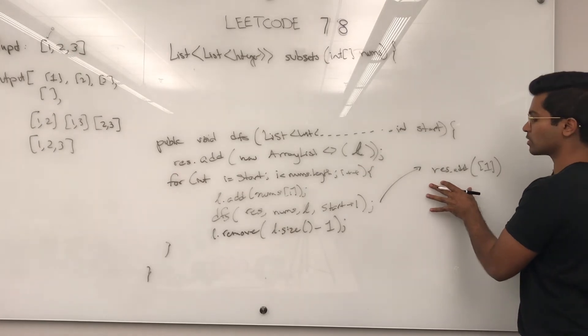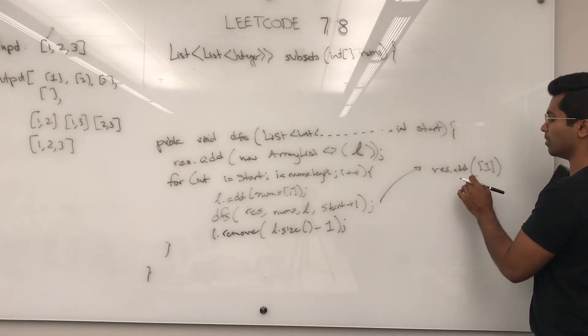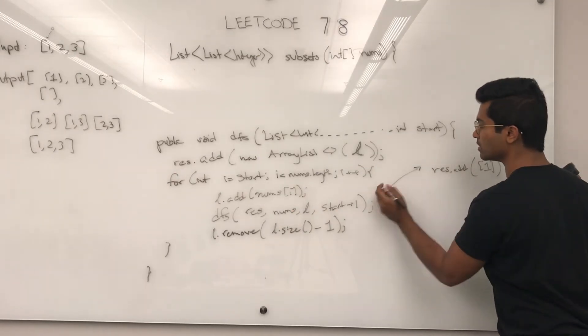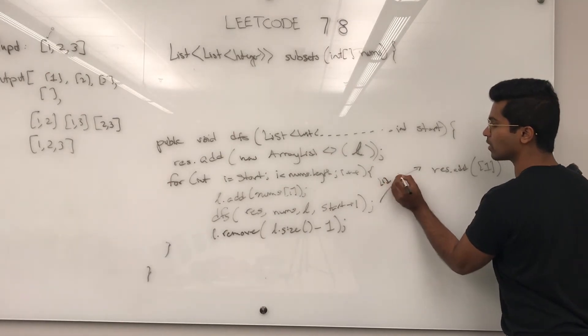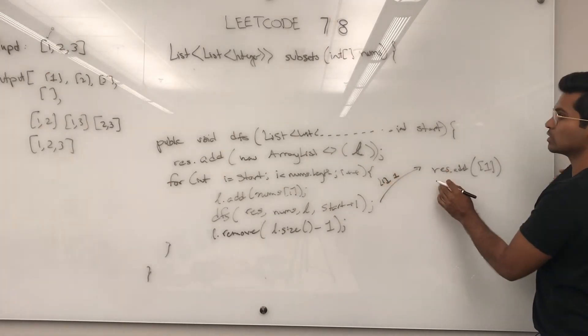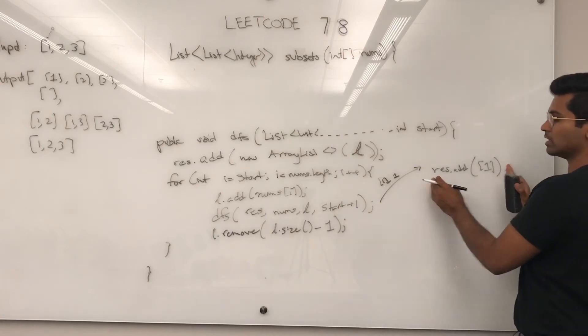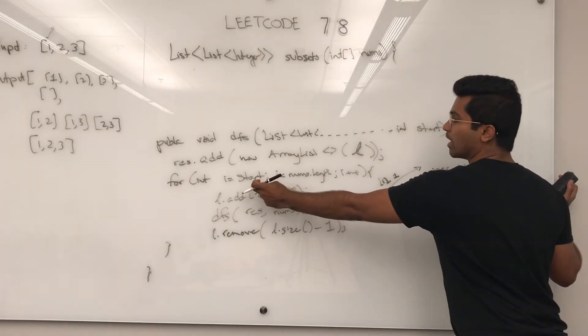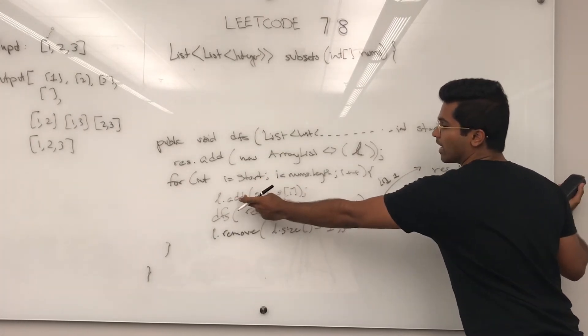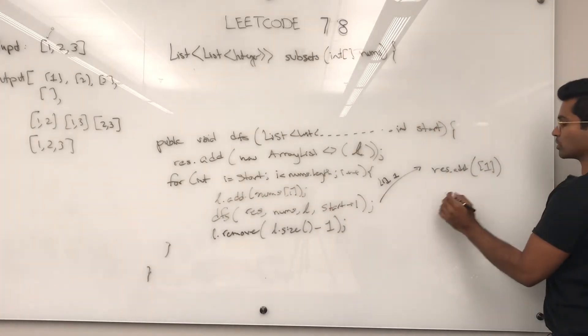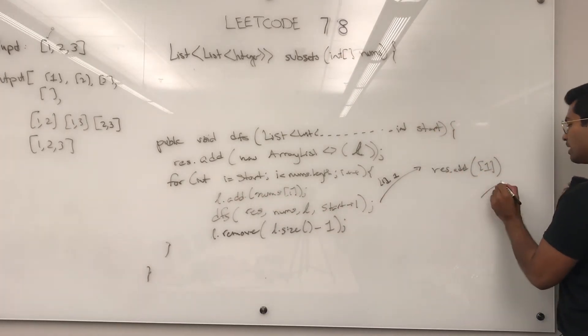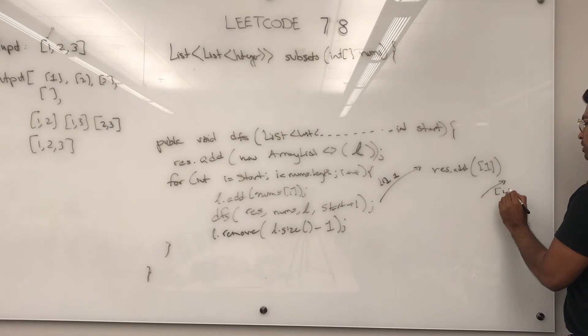And then when this guy calls his own, his start is going to be, his l is going to look like this, and his start is actually going to be one. So when he gets the function, he's going to start at i is equal to one, and we're going to add l dot add one more. So his DFS is going to have one comma two in it. And then his DFS is going to have one comma two comma three.